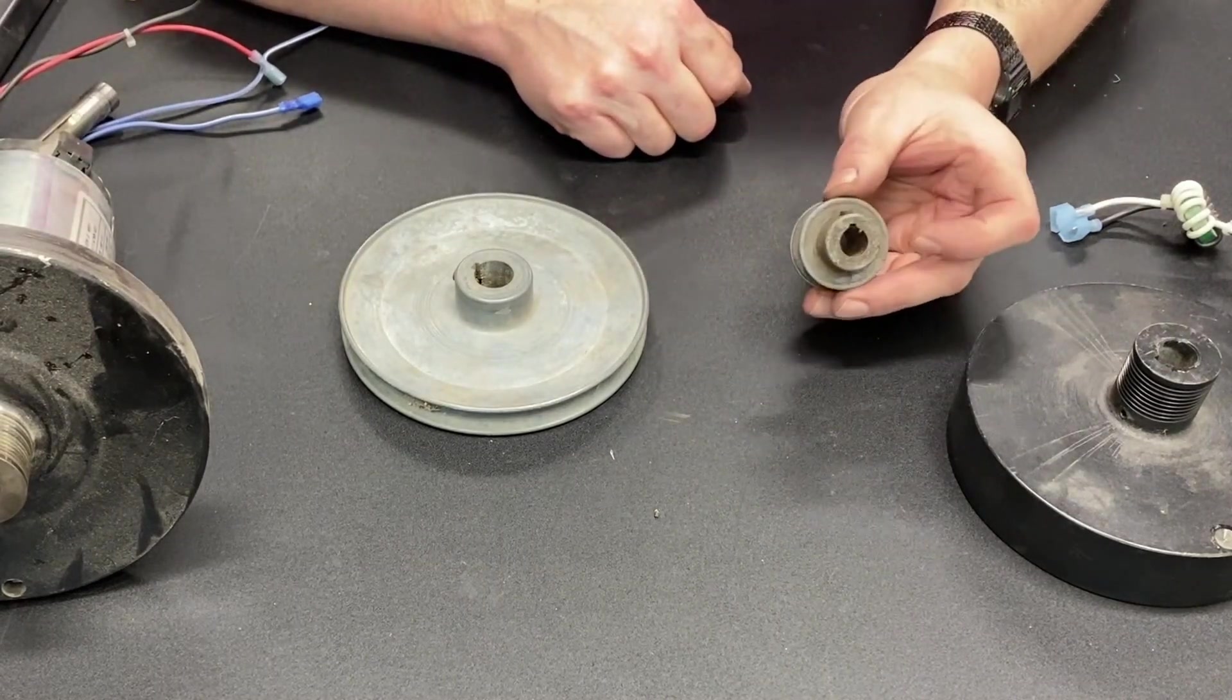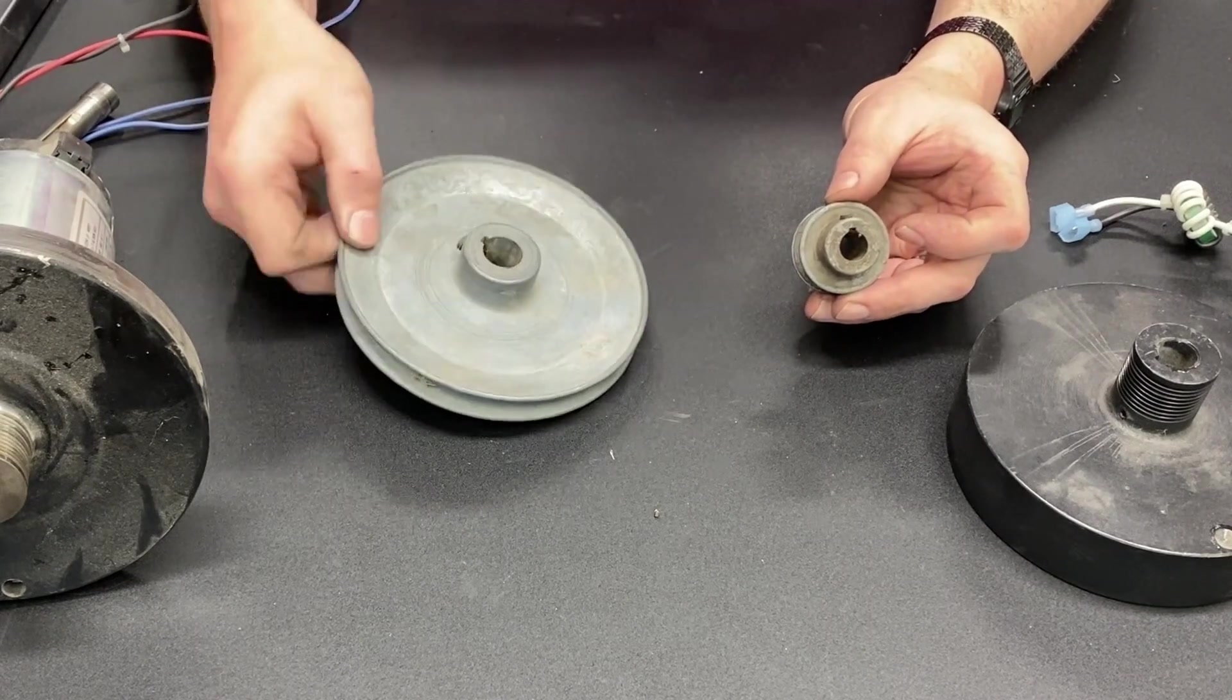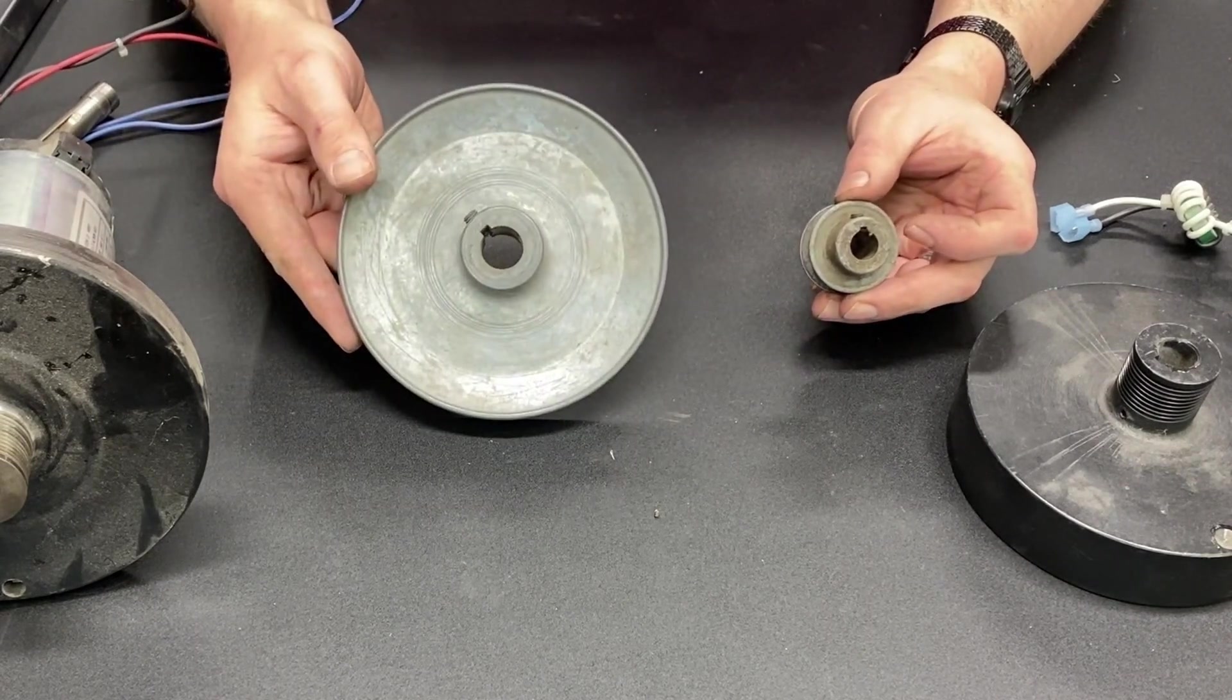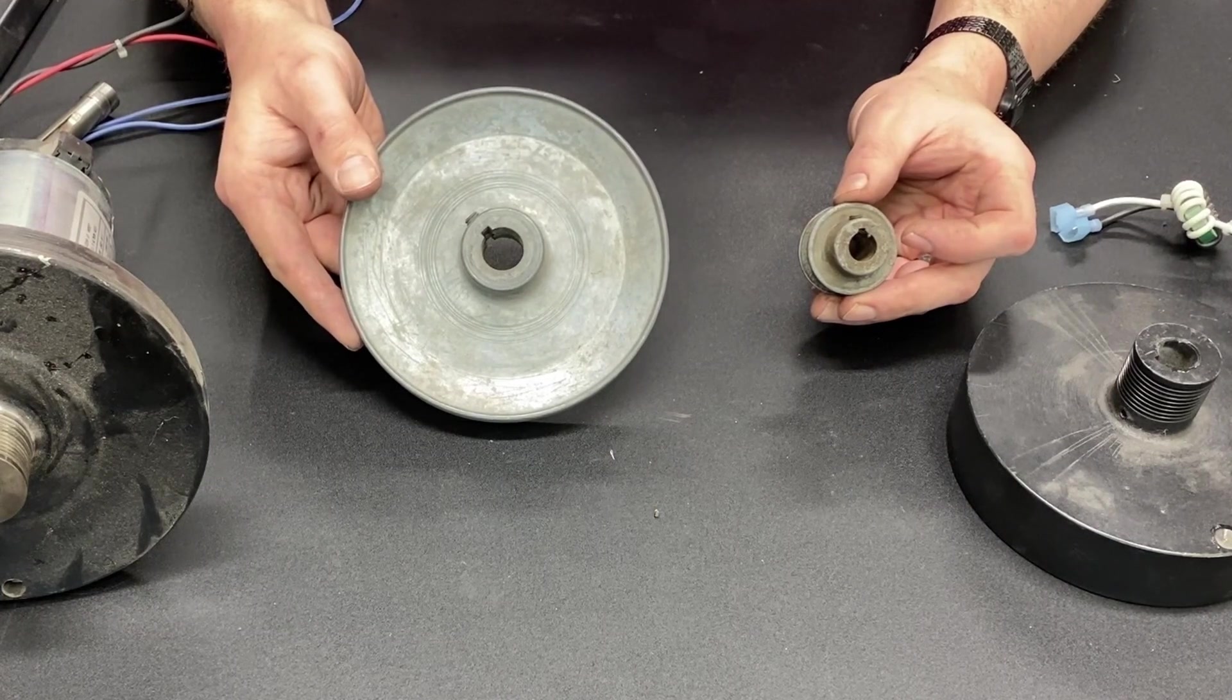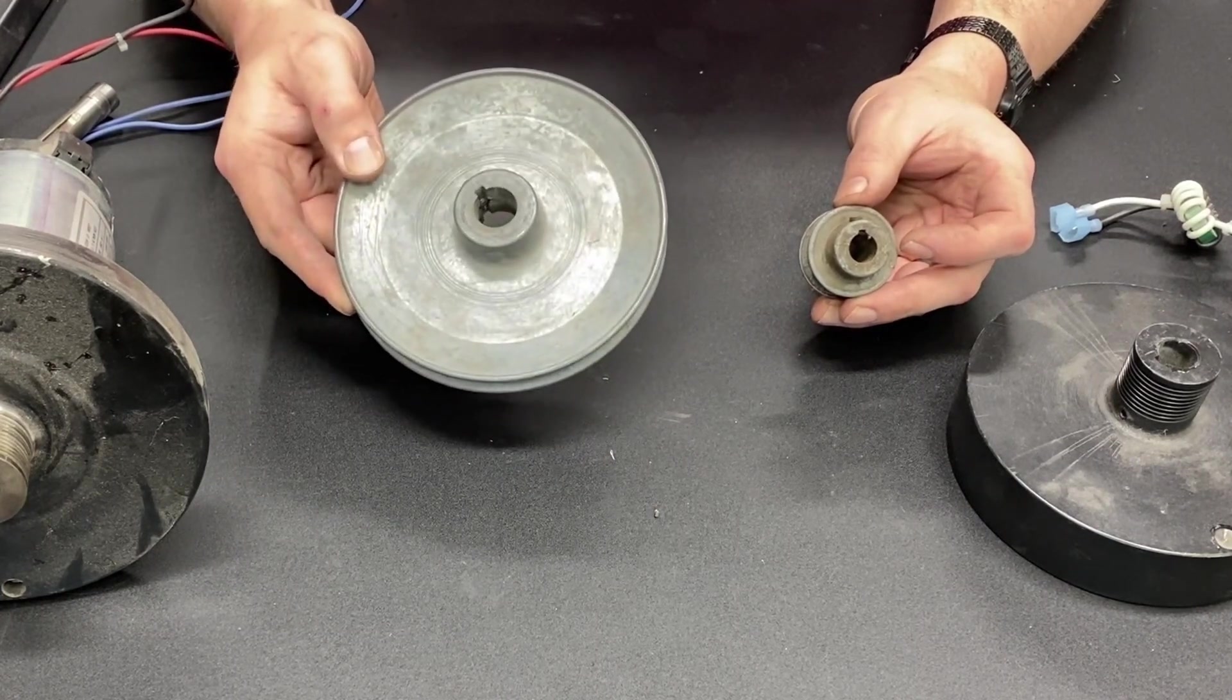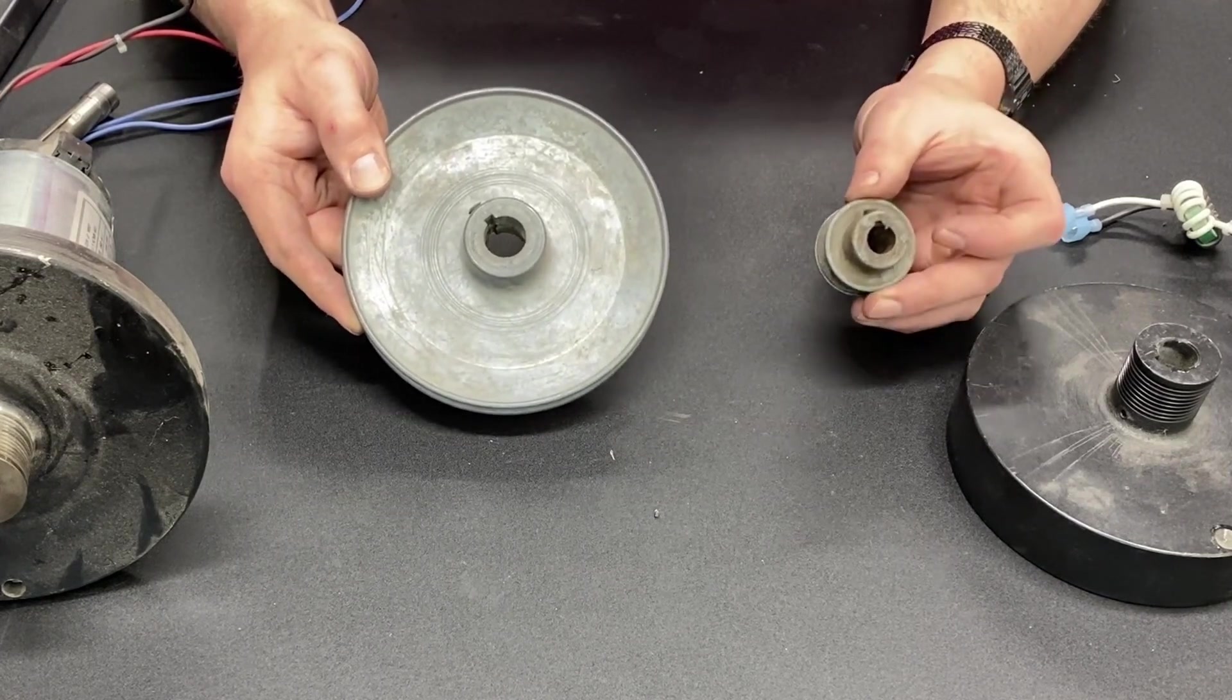This pulley is a three-quarter inch pulley, and this pulley is a four-and-a-half inch pulley, measured from the inside of the V. So this pulley has approximately six times the diameter of this pulley.